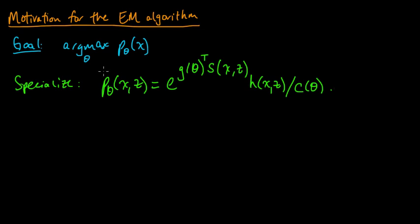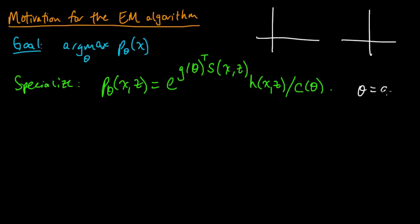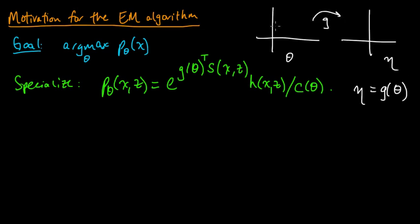Now we're trying to maximize this. It turns out that the MLE is invariant under reparameterization. So it's sufficient to consider only the case where theta equals G of theta. Let me draw a picture to explain why this is the case. Suppose G of theta equals eta, and G is a map that takes us from thetas to etas.